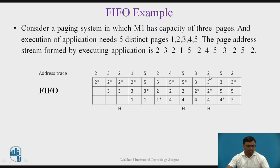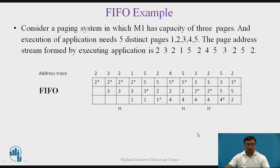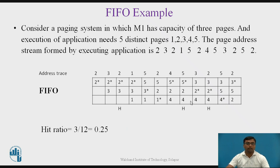Continuing, block two is accessed — two already exists in cache, so a cache hit occurs again. Next, block five is replaced at the position of block two, four is marked with a star, and three is marked as the oldest block. The execution of the current application ends. After the replacement strategy, we can calculate the hit ratio: the number of hits is 3 and the total number of accesses is 12, so the hit ratio is 3 divided by 12, equal to 0.25.